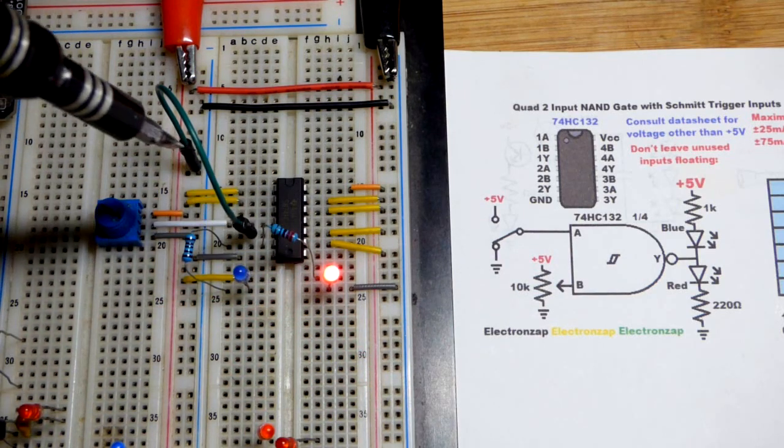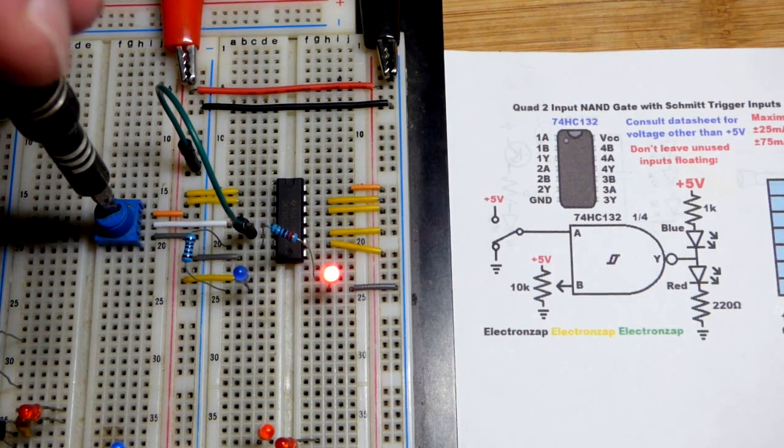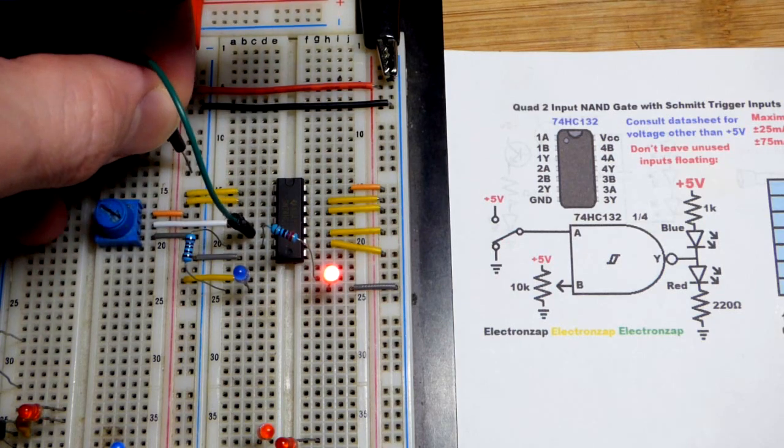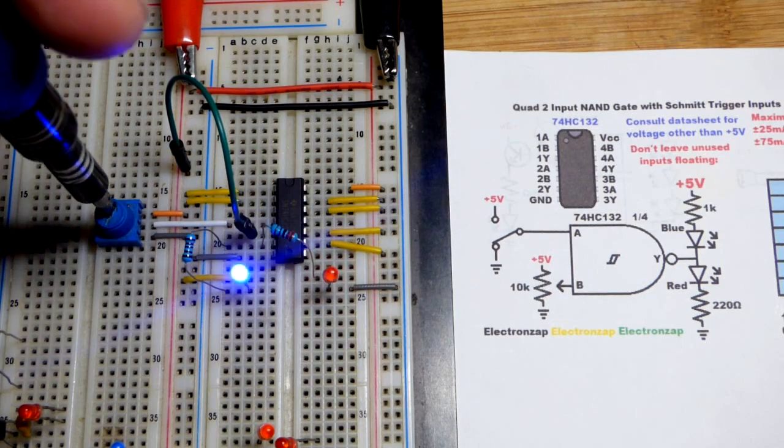So we have both inputs low there, the output's high. If I set the trim pot high, the output stays high. We have to take the jumper there, set it high, in addition to setting the trim pot high.